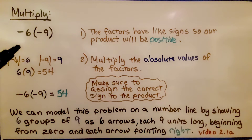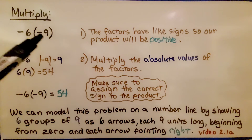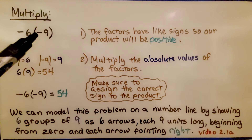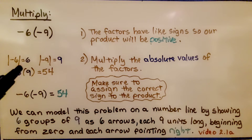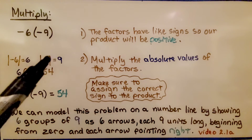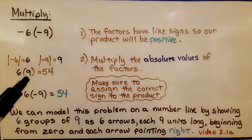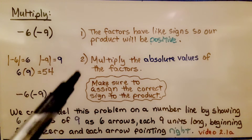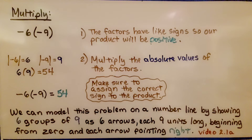Now we're multiplying negative 6 times negative 9. The factors have like signs, so our product will be positive. We multiply the absolute values: the absolute value of negative 6 is 6 — it's 6 jumps from zero. The absolute value of negative 9 is 9 — it's 9 jumps from zero. 6 times 9 equals 54, and the product is positive 54. We can model this on a number line as 6 arrows, each 9 units long, beginning from zero and each arrow pointing right.